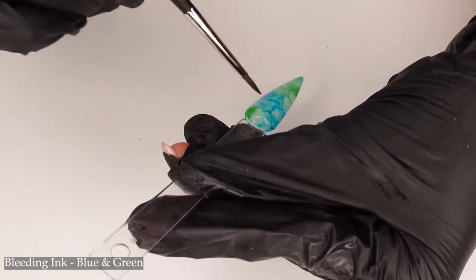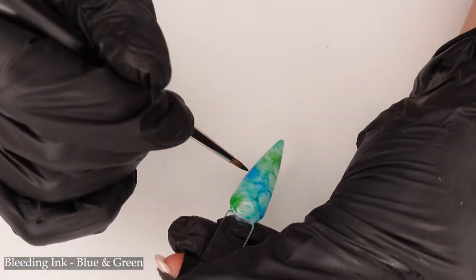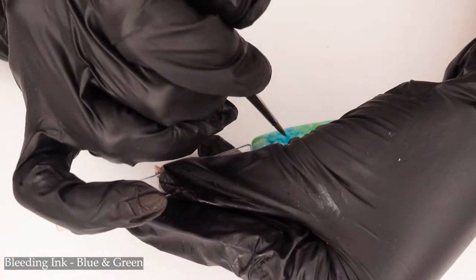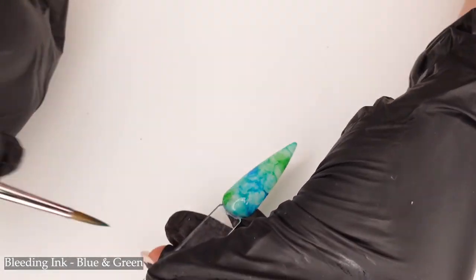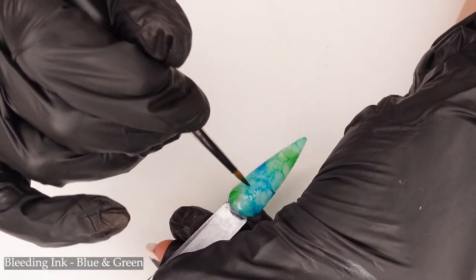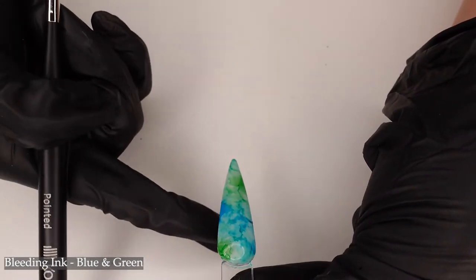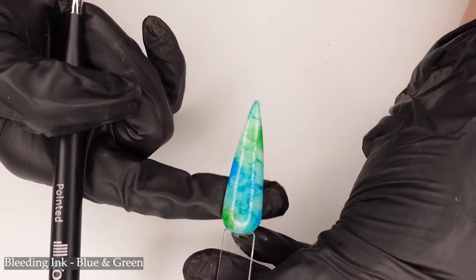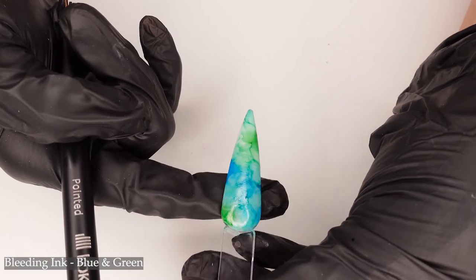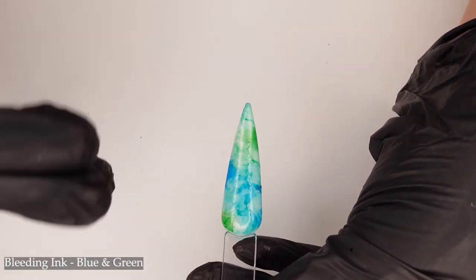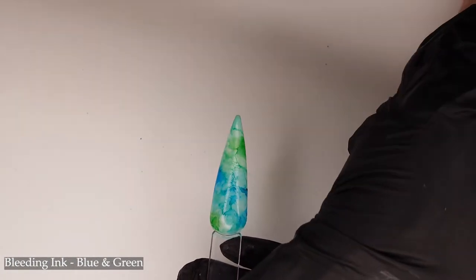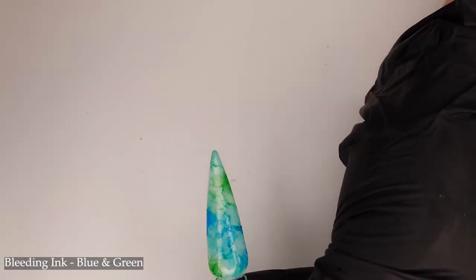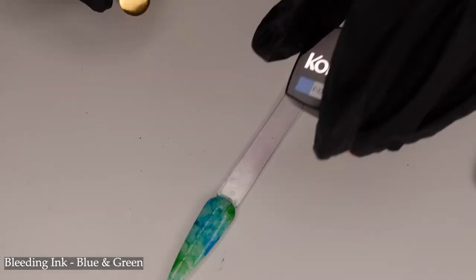And this one, I decided to do it all over the nail instead of just in one specific stripe or pattern. You can see this is much more watercolor. Look at that. And then I'm just going to wait for it to dry. Only take a couple seconds though because it dries very quickly. And I'm going to put another layer of color over that, kind of blend it all together.